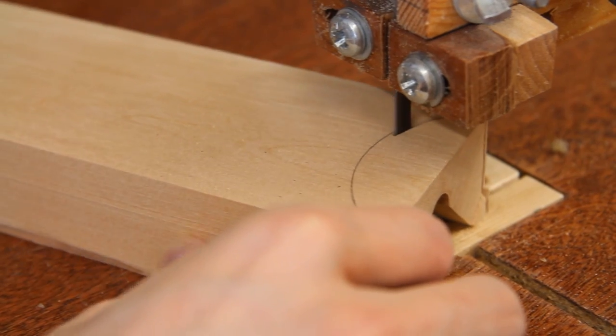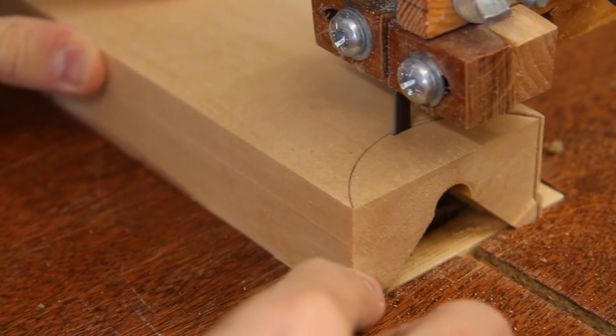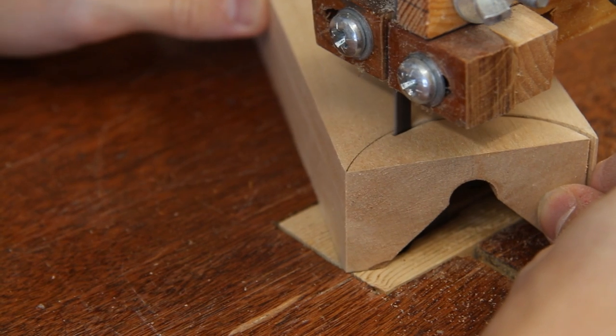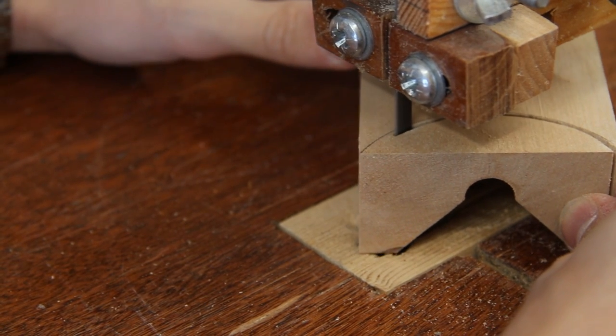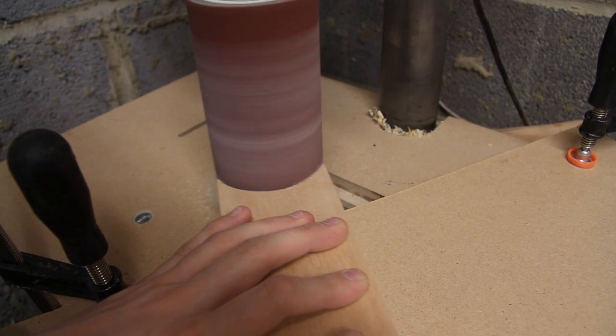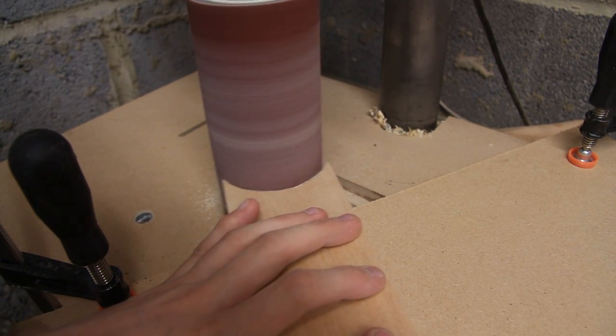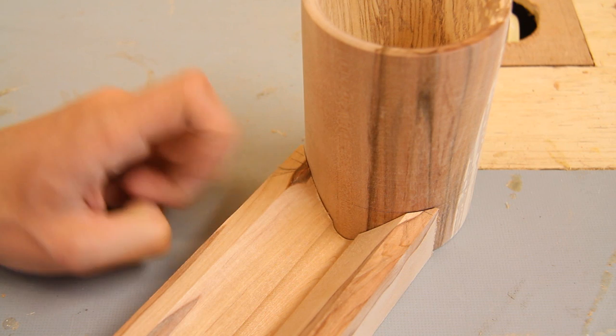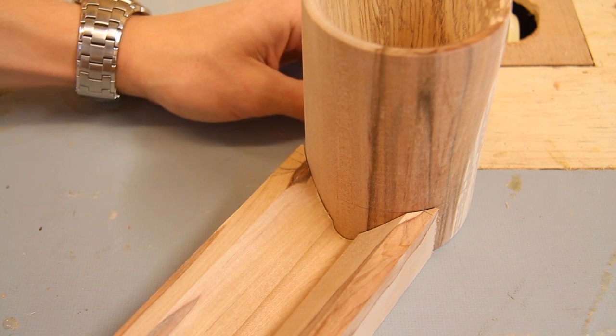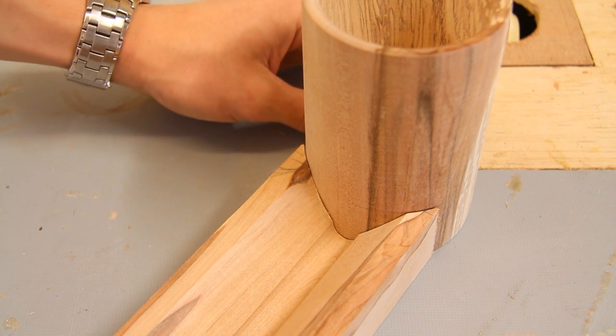And over here at the bandsaw I can cut just shy of that line. So there we go, after a fair bit of careful sanding I've got a reasonable join between the two parts.